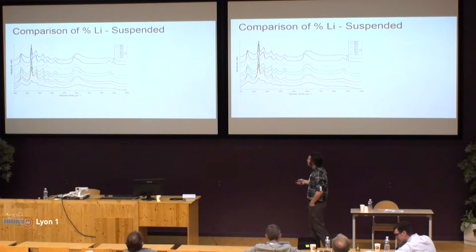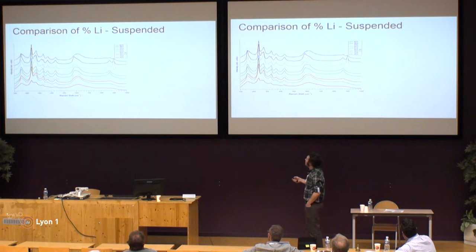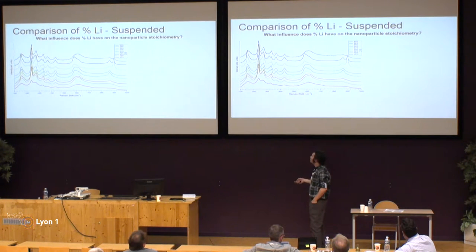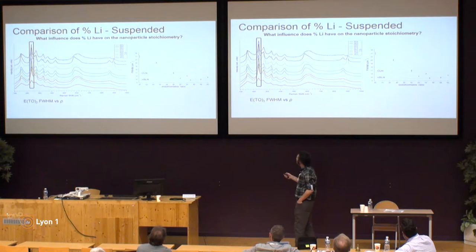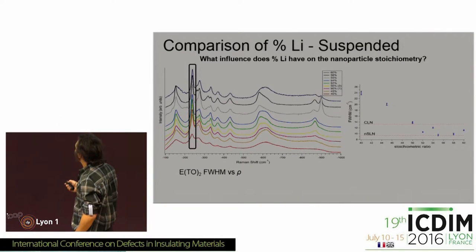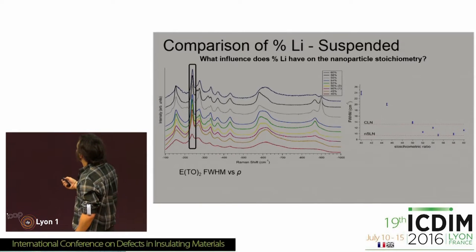Here are all the Raman spectra I got. From bottom to top, at the bottom you're in the lithium-poor end, all the way up to the top you're at the lithium-rich end. We wanted to see how the starting lithium concentration affects the resulting nanocrystal stoichiometry. If you do peak fitting, you notice there's a minimum anywhere between about 52 and 60 percent, so on the lithium-rich side. The peak broadening goes up on the lithium-poor end. This is the peak width as a function of the initial stoichiometric ratio for the ETO2 mode.